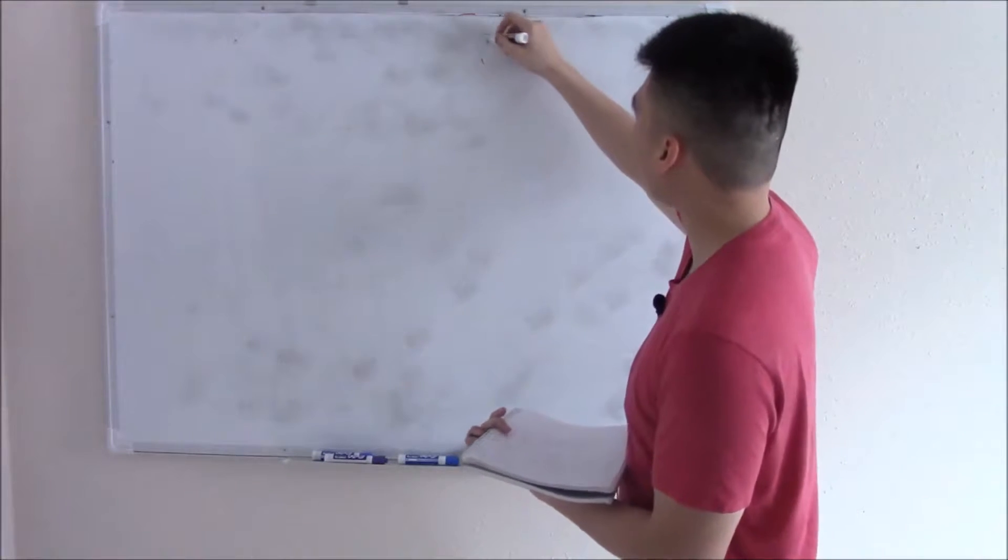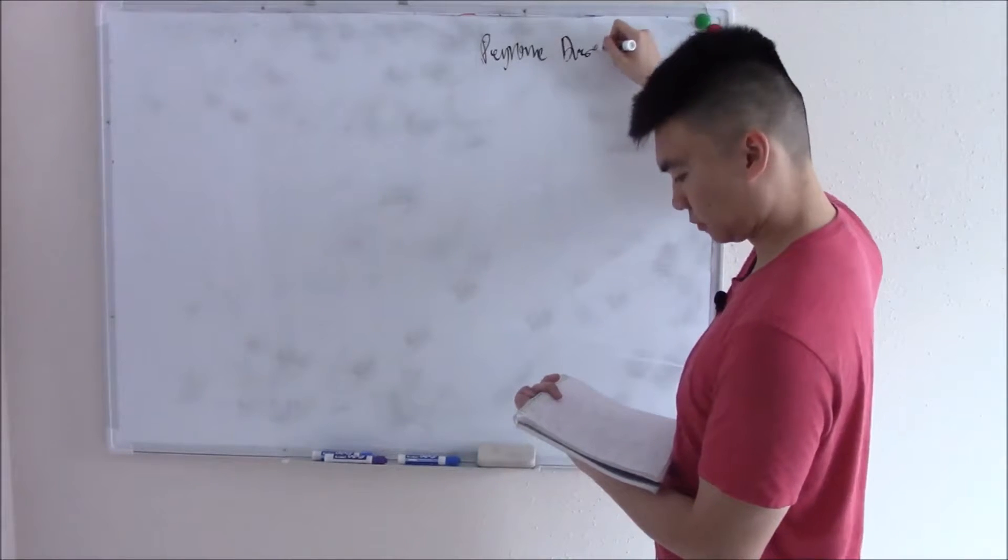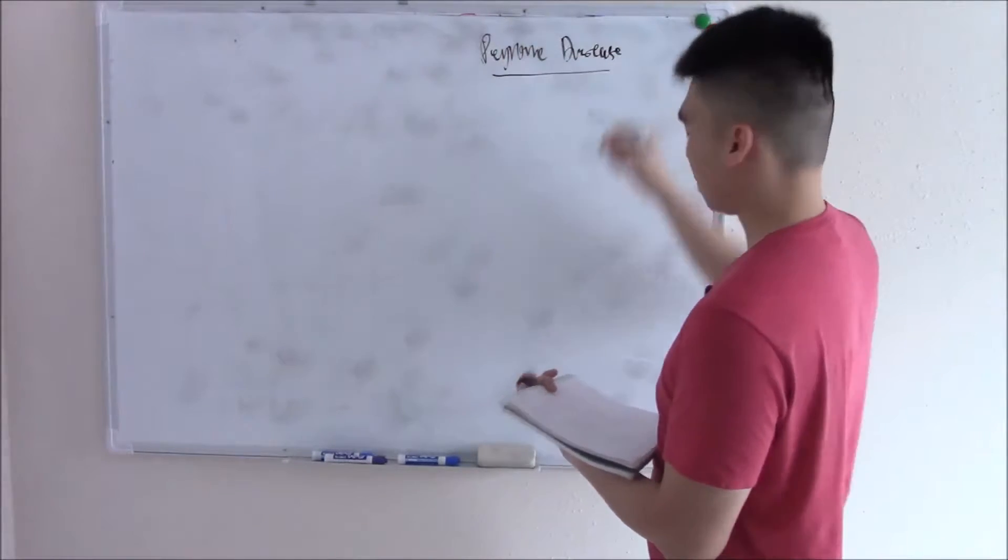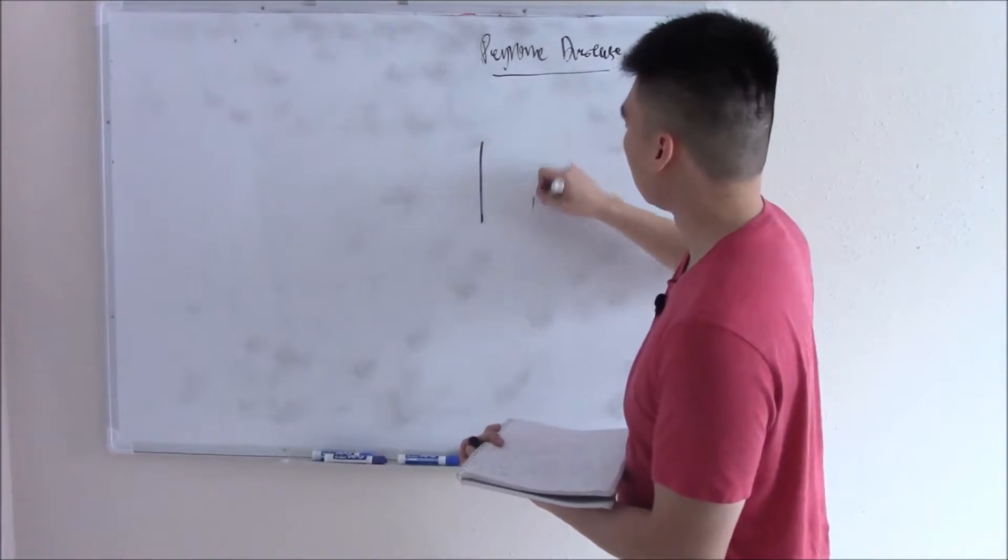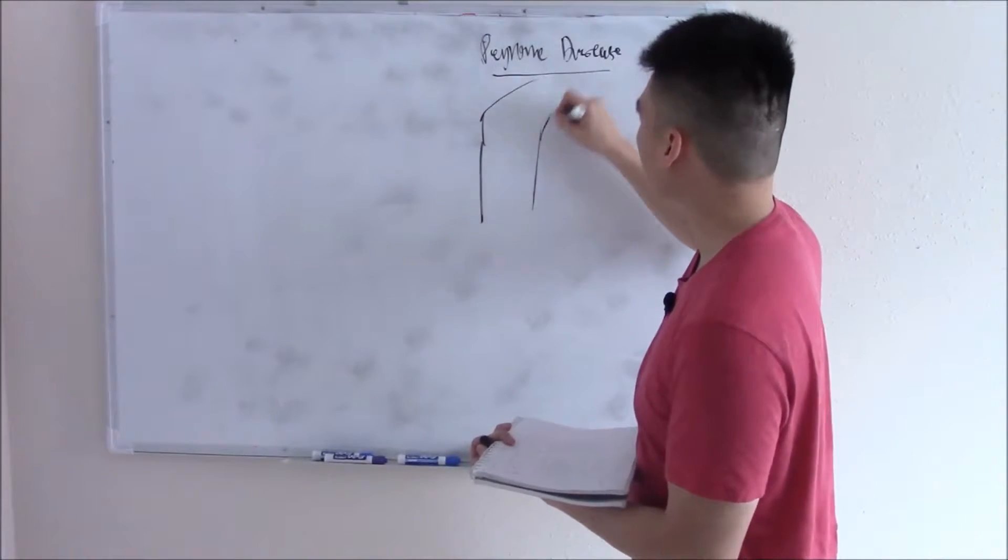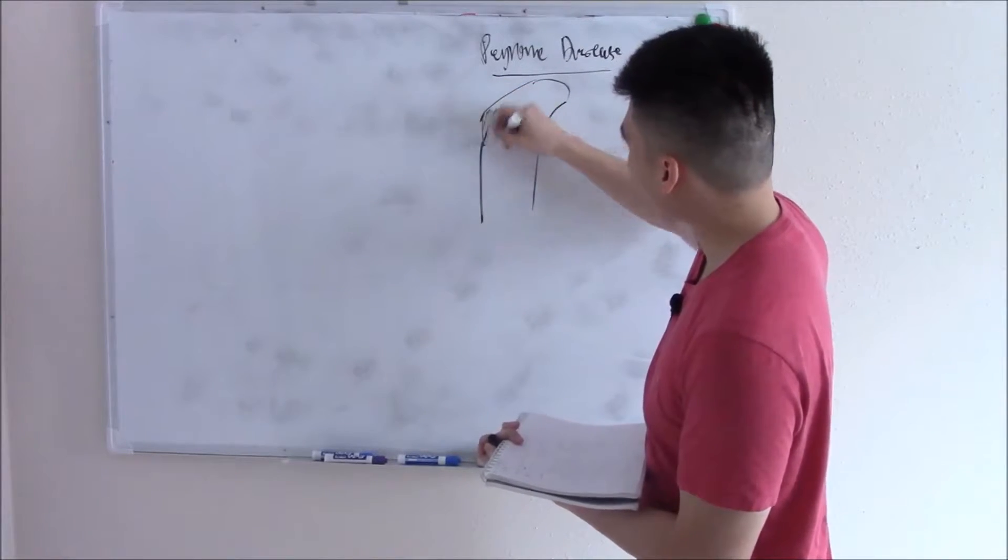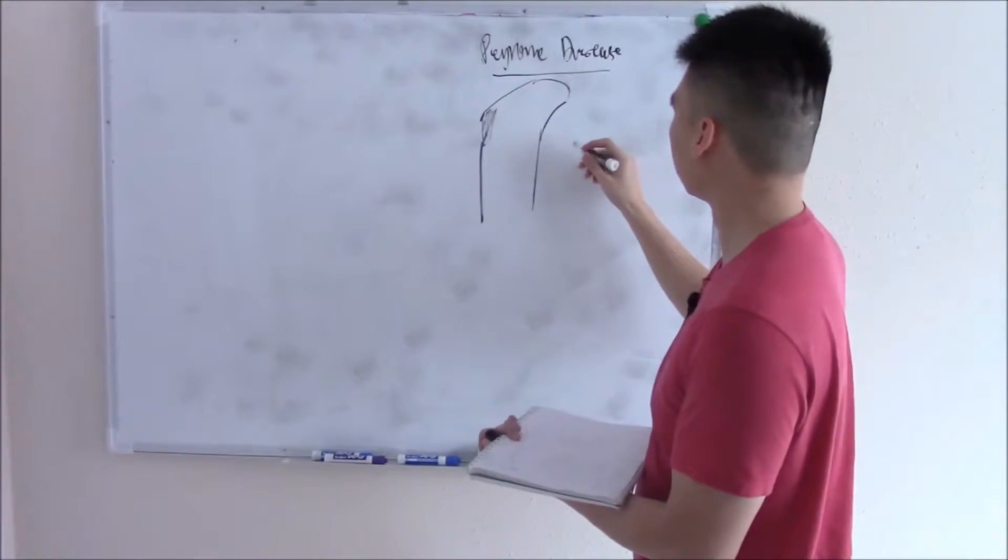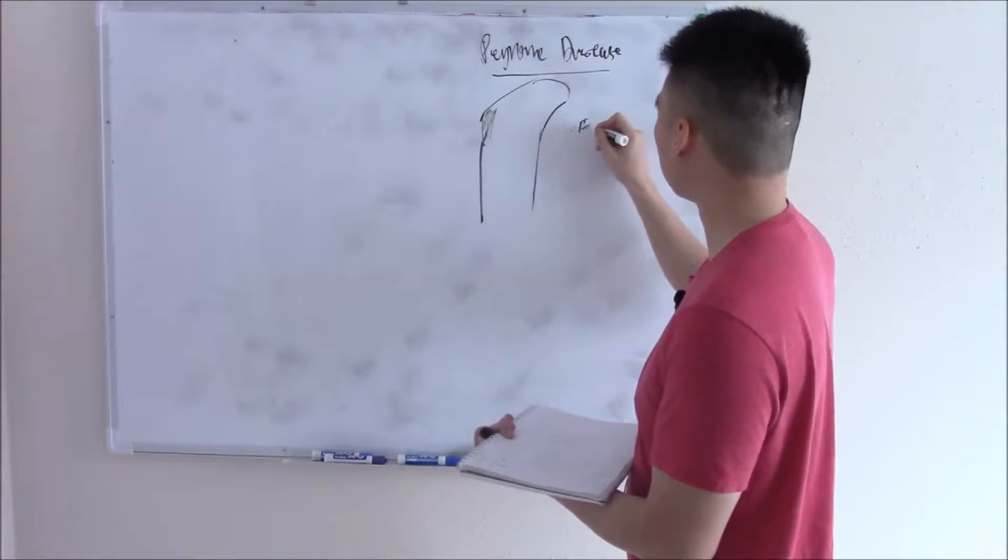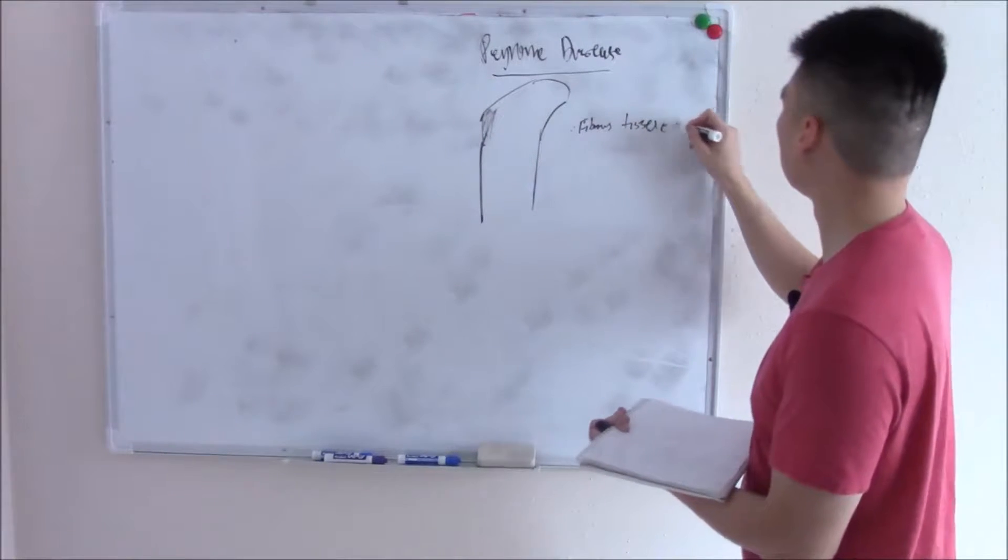One thing I want to talk about is something called Peyronie disease. This is when you have fibrous tissue or scar tissue in your penis and it causes it to bend. If you have fibrous tissue, it can pull on the penis and cause it to bend. So it's fibrous tissue causing a bend.